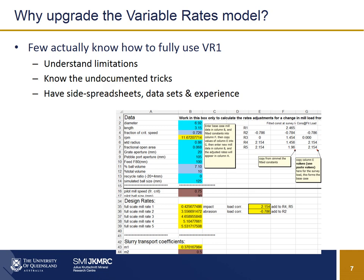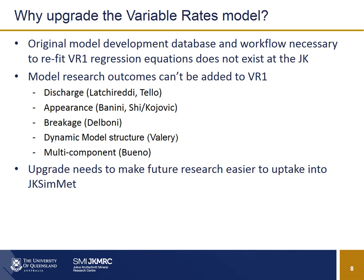There are actually only a handful of experts who really know how to use this model well — they understand the limitations, know the undocumented tricks, and have side spreadsheets, data sets, and experience they can draw from. But this knowledge is not built into the model, which is a problem. Also, the original model development database and the workflow used to create the regression equations no longer exists at the JK — it's been lost — so the regression equations need to be re-regressed whenever a change is made to the model itself. There's been plenty of work at the JK on the SAGMA model, but the variable rates model has remained static.